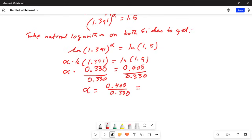Type it in your calculator: 0.405 divided by 0.330, which equals 1.227. That's the answer.